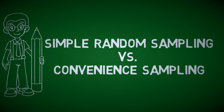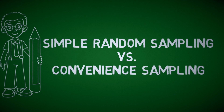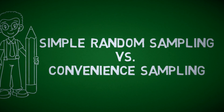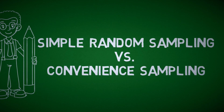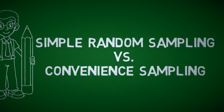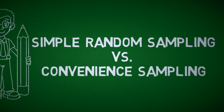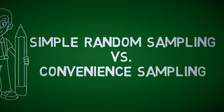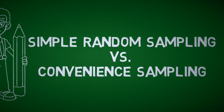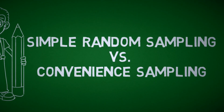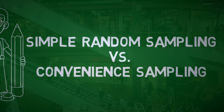One is a probability sampling procedure and the other is not. Taking this example a little bit further, how can we turn this convenience sampling procedure into something that's more probability based?